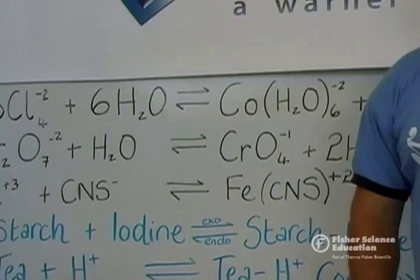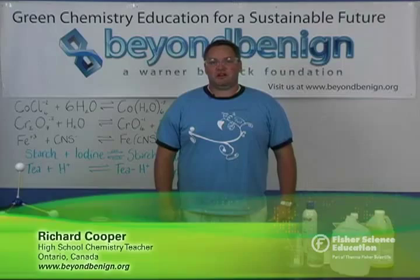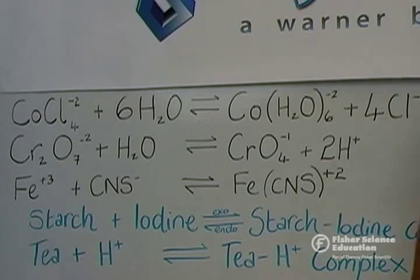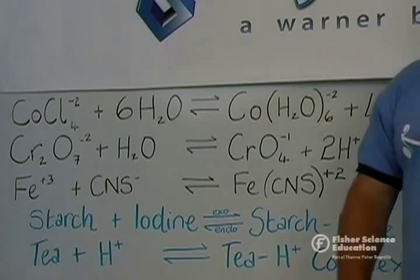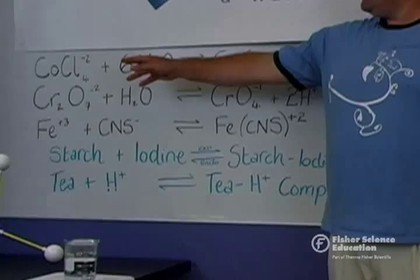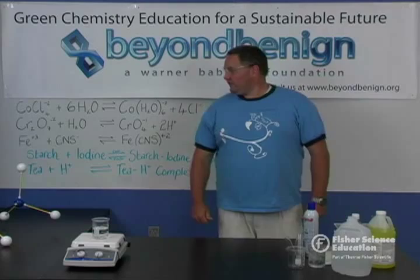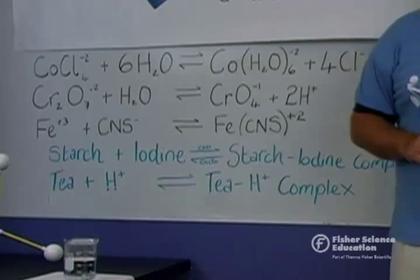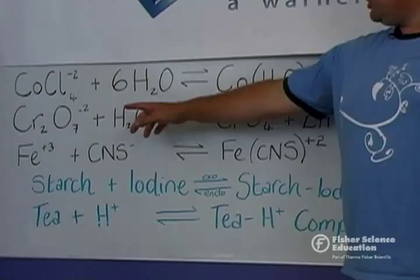Today we're going to look at a couple of reactions that teachers use to demonstrate Le Chatelier's Principle and Dynamic Equilibriums. One reaction commonly used is reacting cobalt chloride salt with water to produce the cobalt ion in solution with four chloride ions. This reaction is widely used because of the drastic color change from the blue cobalt chloride ions to the pink cobalt hydrated ion.